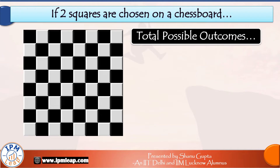Now let me tell you right at the beginning that in order to solve these problems, you need some basic overview of the topics permutations and combinations as well as probability. I strongly recommend that you revise the basics before trying out these questions. Both our questions start with a statement: if two squares are chosen on an 8×8 chess board. In the language of probability, we need to see everything in the context of our random experiment, which in this case is choosing two squares on a chess board.